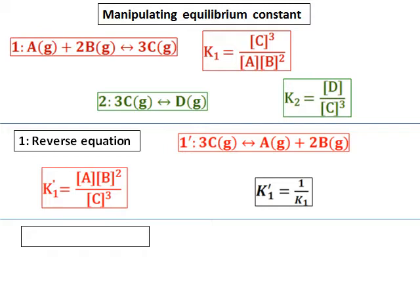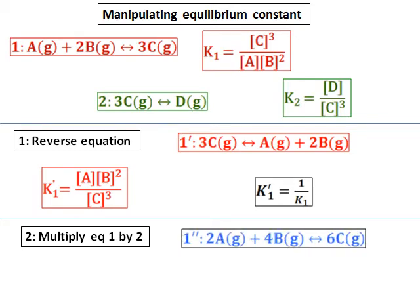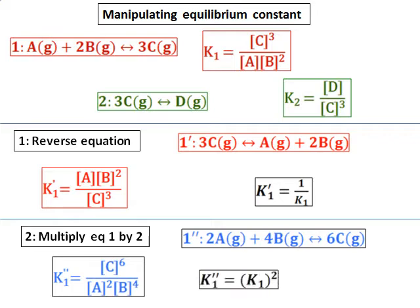The second manipulation is multiplying equation 1 by 2. When I multiply equation 1 by 2, I get 2A plus 4B giving 6C. K1-double-dash for this equation is concentration of C raised to the power of 6, divided by concentration of A squared times concentration of B raised to the power of 4. Comparing K1-double-dash with K1, K1-double-dash is K1 raised to the power of 2 — not twice. The new K becomes the square of the previous one.